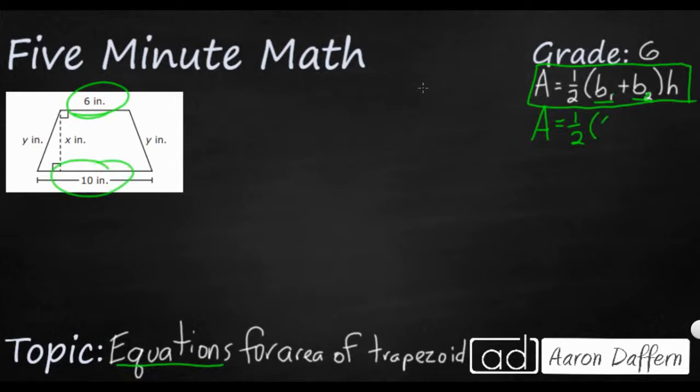It doesn't really matter which one is which, because at the end of the day, you're going to add them both, and then we're going to take our height. Now, our height in this case is not the y, simply because it is a diagonal line. A height always has to be perpendicular to the bases, has to be straight up and down. You see you've got your right angles right here, which means in this case, we don't really know what our height is.